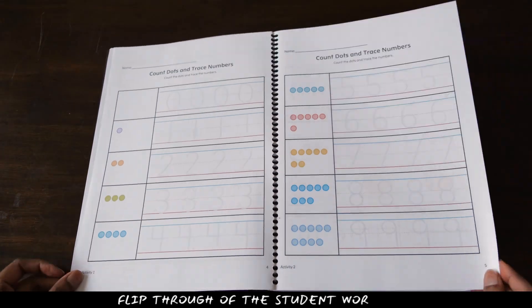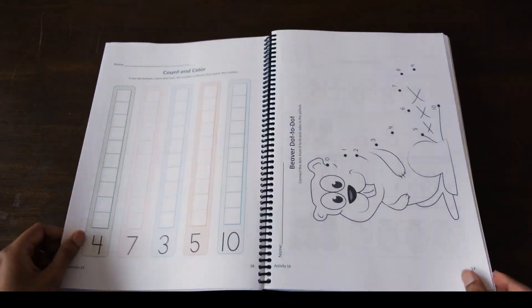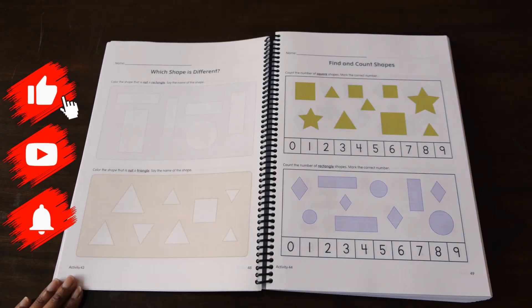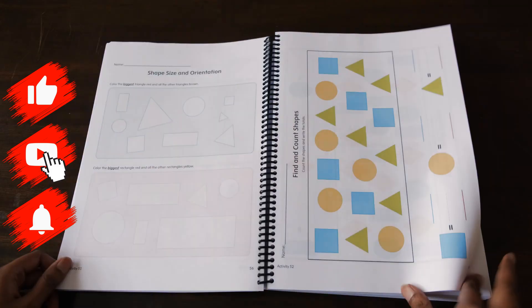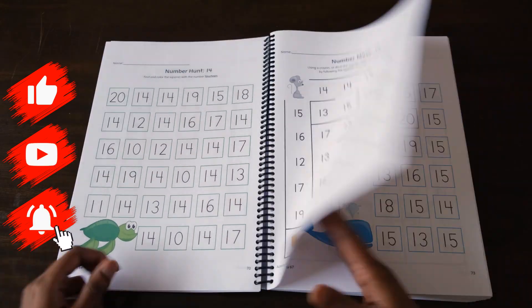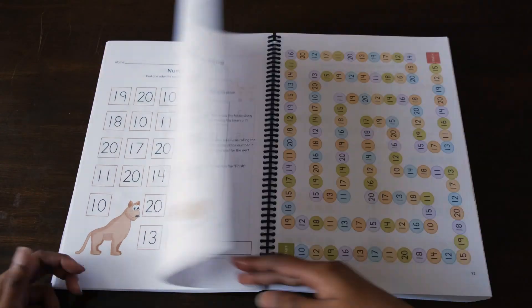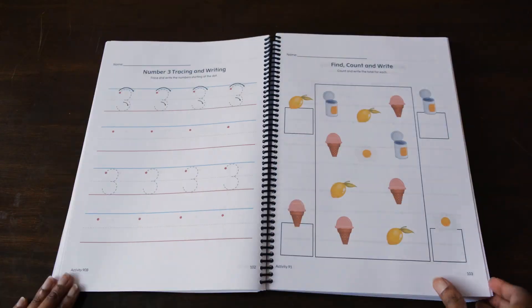It builds number recognition and awareness of place values under 100, while also introducing math symbols and math expressions, like 1 plus 1 equals 2. It involves practices for arithmetic and skip counting, shape recognition, as well as how to draw and write numbers.